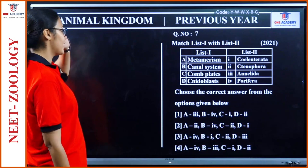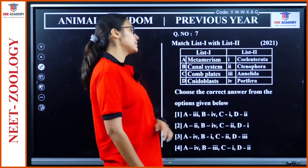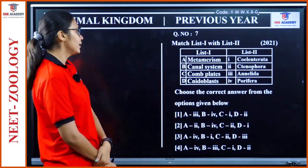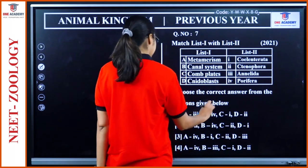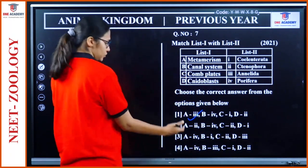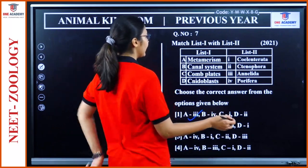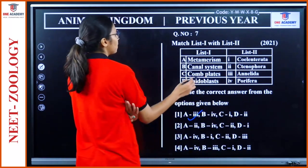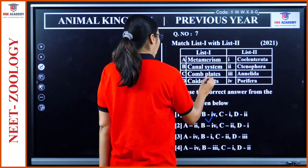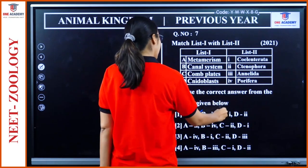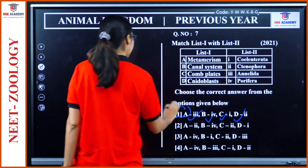Question 7: Match the following. Metamerism is shown by Annelida — A3. Canal system — Porifera. Comb plates — Ctenophora. Cnidoblast — Cnidaria. Option 1 is the right answer.